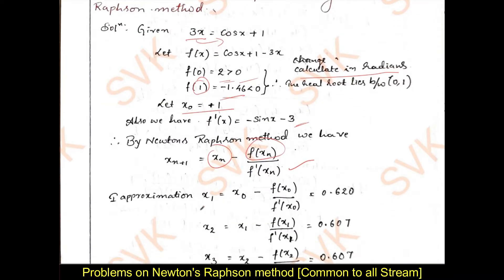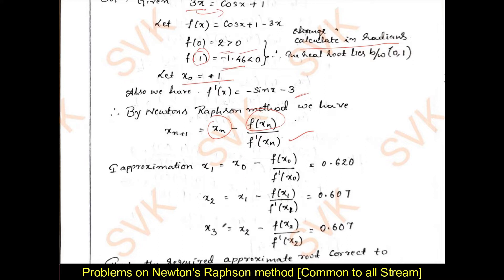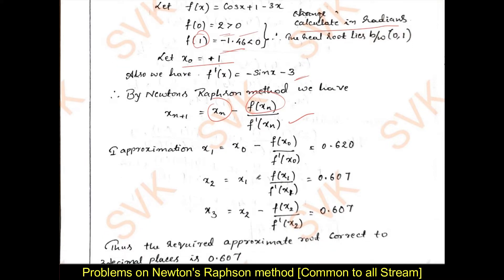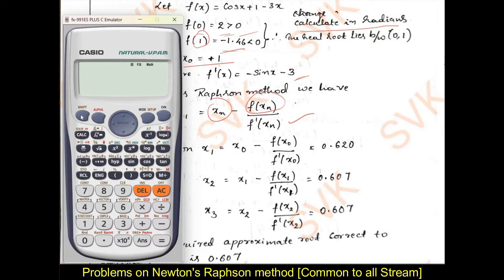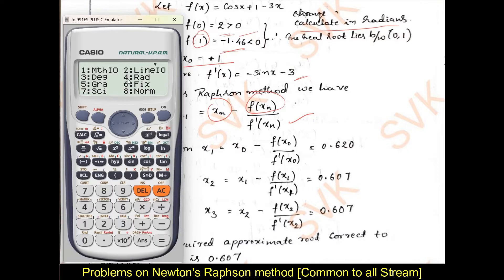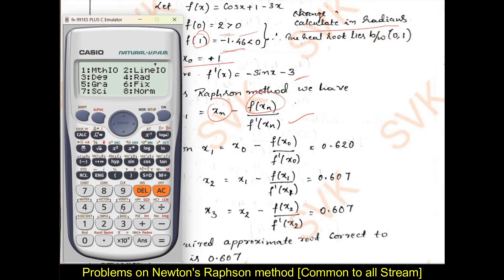I will be calculating the first approximation, second approximation, and third approximation. Now I will show how to solve this problem thoroughly using a calculator. First, clear all the memory by pressing shift 9, shift 9, clear all, press 3 equal to. After clearing all the memory, go for radian mode — shift setup, radian is 4. Then fix for 3 decimal places using shift setup.